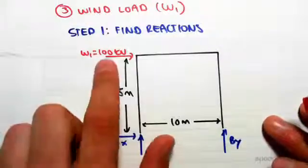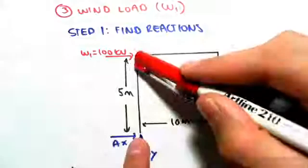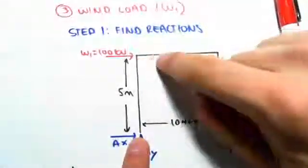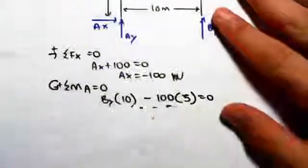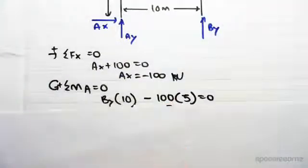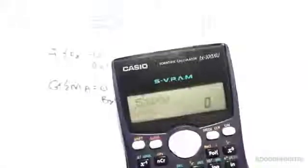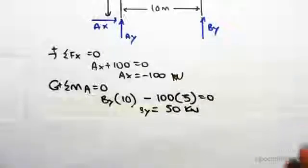This 100 here is going around like this which is going clockwise about A, and its lever arm is five meters. So it's going to be minus 100 times five. Solving this, it's five times 100 divided by 10. So we get 50 kilonewtons By.